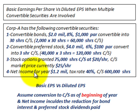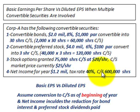The company has net income for the year of $1.2 million, a tax rate of 40%, and the average number of common shares outstanding is 600,000 shares.